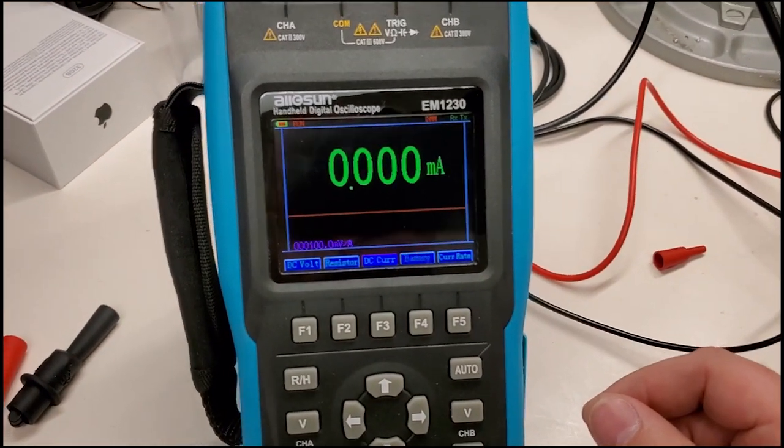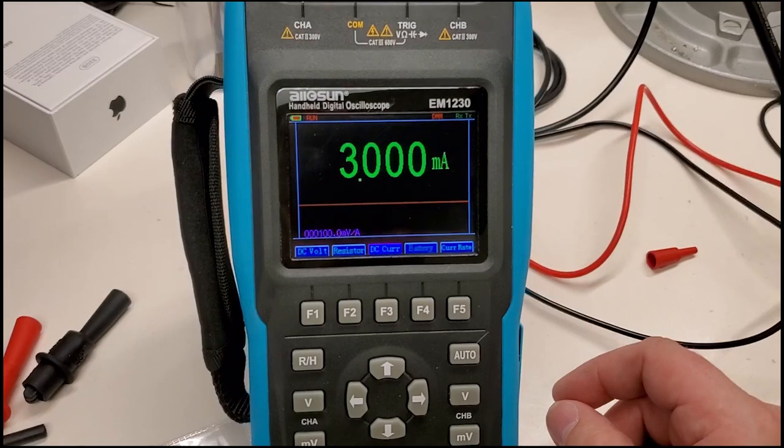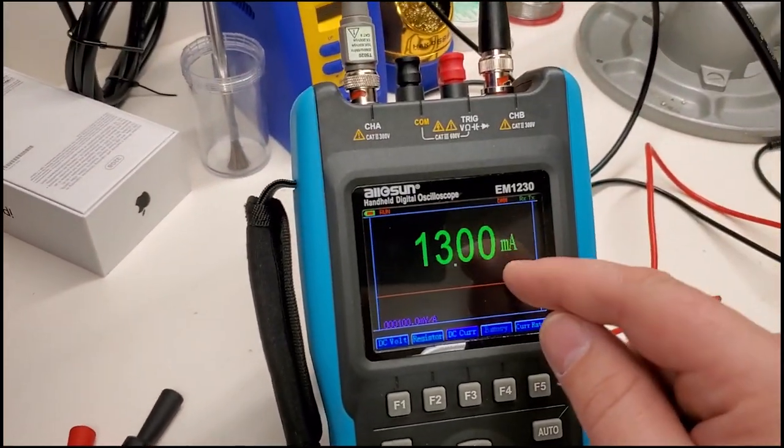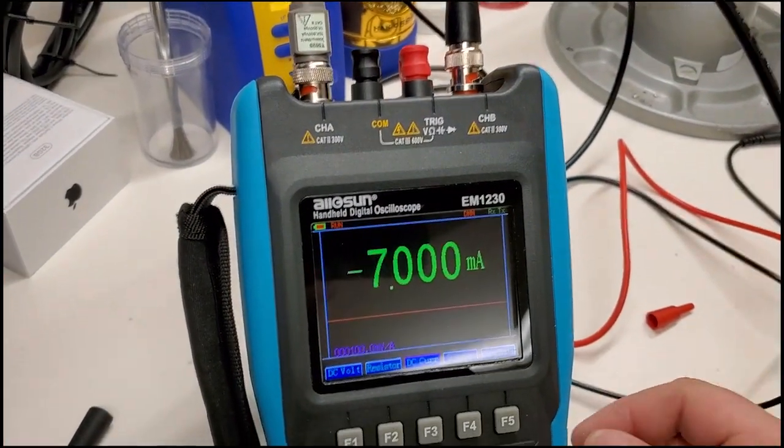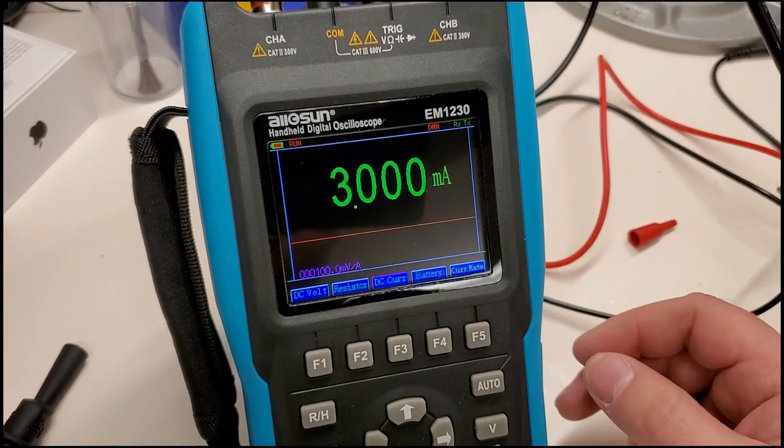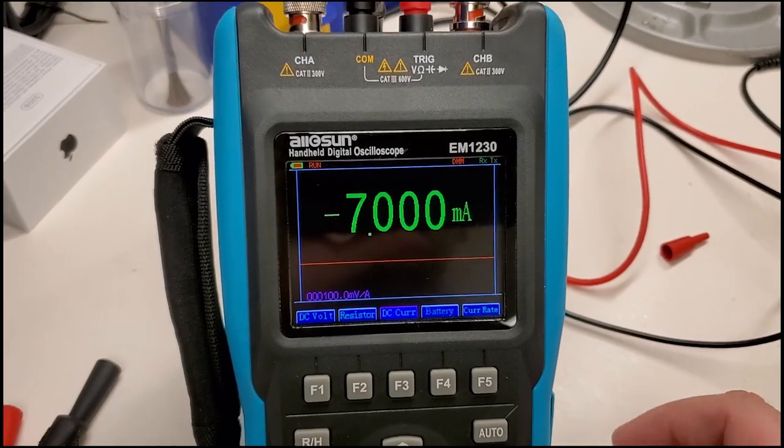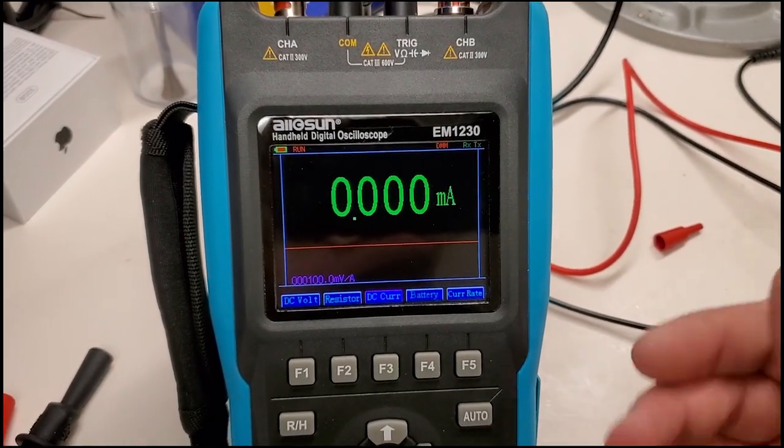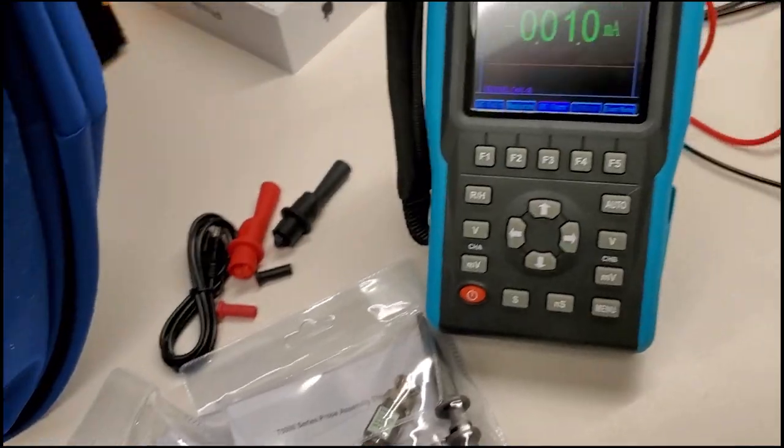With shipping and everything, I believe it was $280 to have a color display, two channel scope meter. That's pretty good for 280 bucks. I mean, that's cheaper than most fluke multimeters, let alone an oscilloscope with probes and everything.